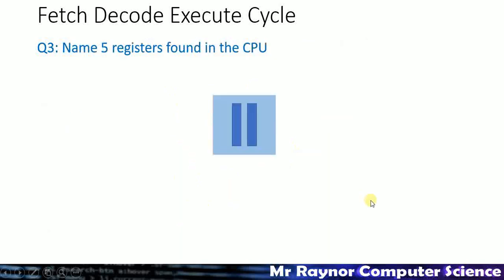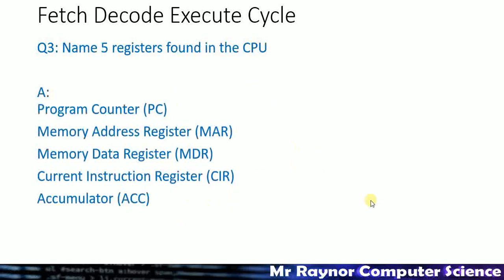Third question: can you name the five registers found in the CPU? The five are: the program counter (PC), the memory address register (MAR), the memory data register (MDR), the current instruction register (CIR), and the accumulator. Those are the five components we're expected to know about in iGCSE.